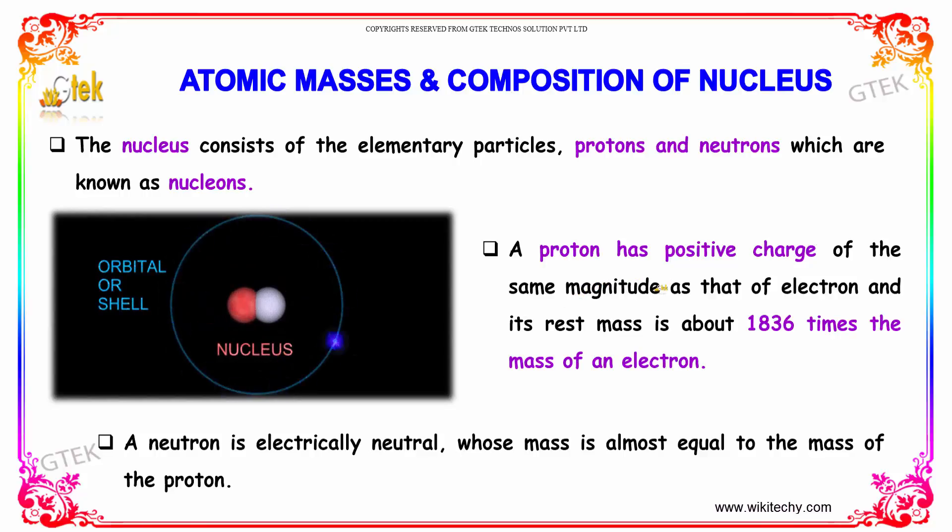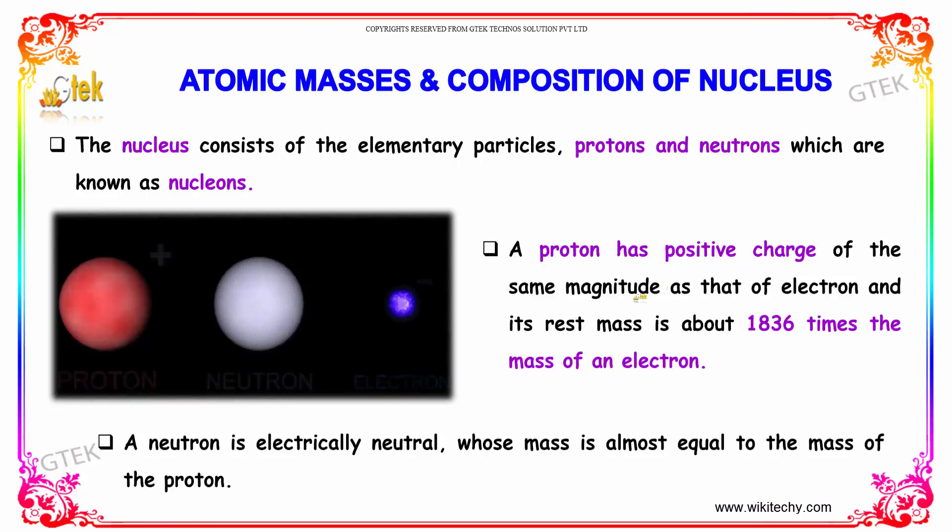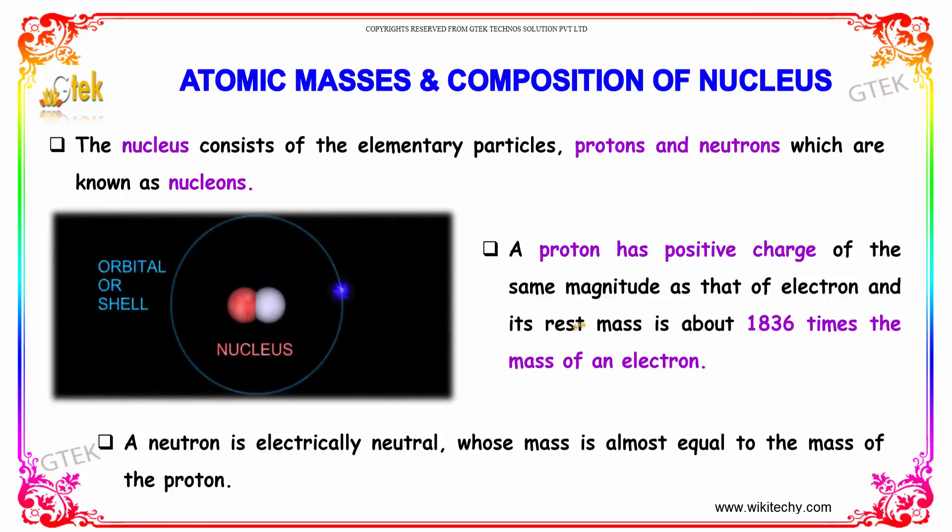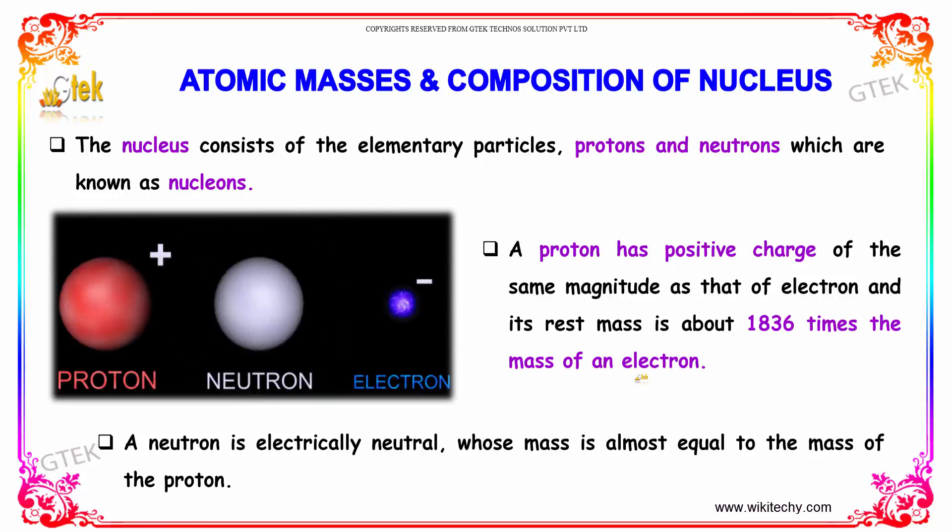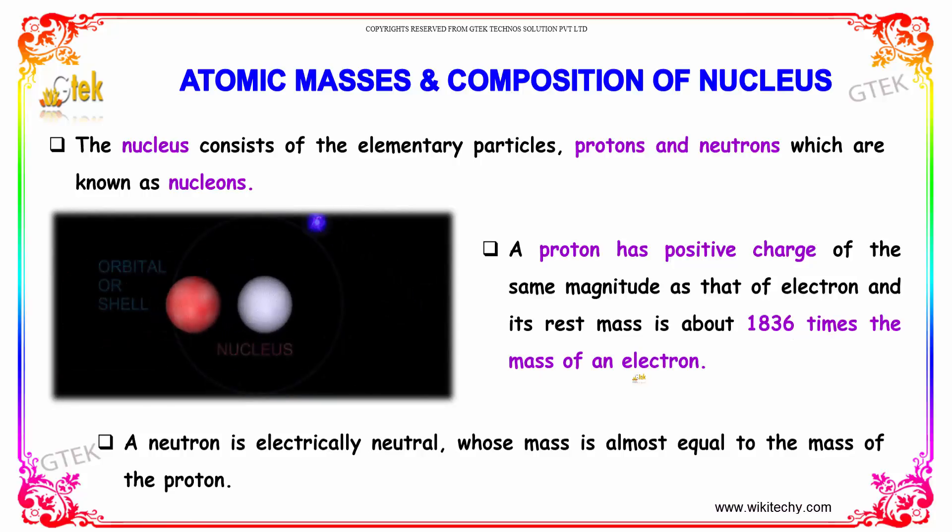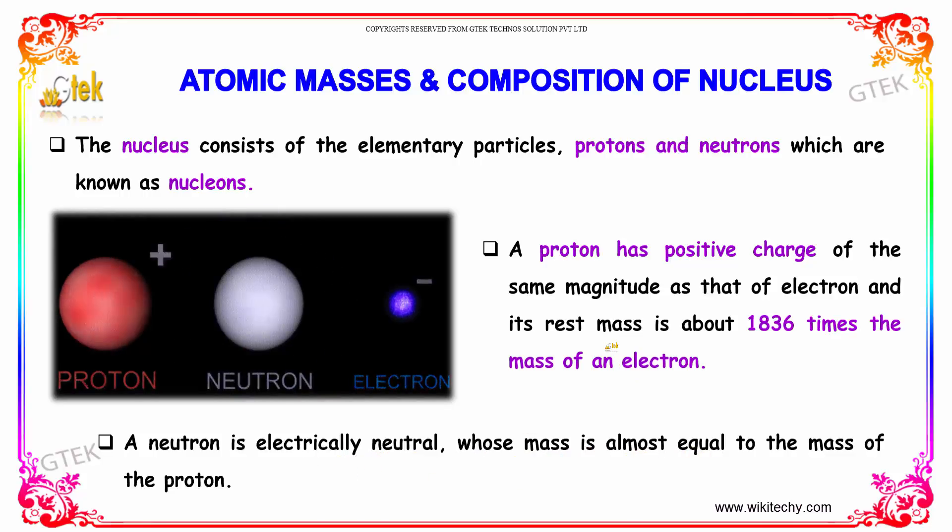A proton has a positive charge of the same magnitude as that of an electron, and its rest mass is about 1836 times the mass of an electron. A neutron is electrically neutral, whose mass is almost equal to the mass of the proton.